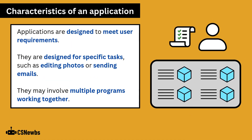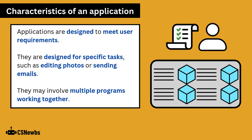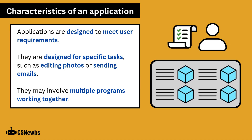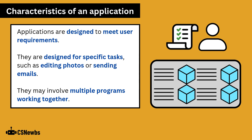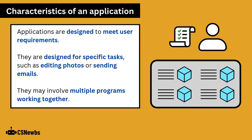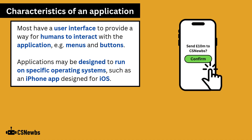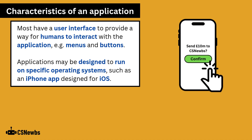Applications are designed to meet user requirements. They are designed for specific tasks, such as editing photos or sending emails, and they may involve multiple programs working together. Most have a user interface to provide a way for humans to interact with the application, such as menus and buttons. Applications may also be designed to run on specific operating systems, such as an iPhone app designed for iOS.